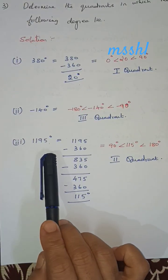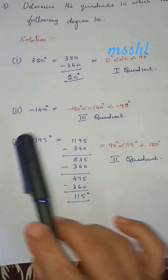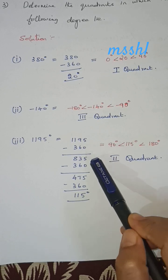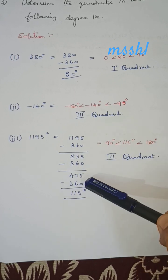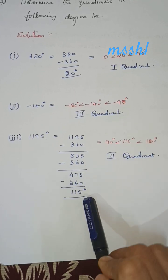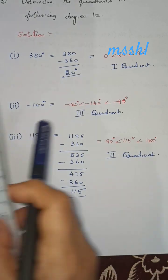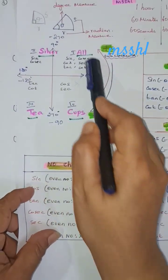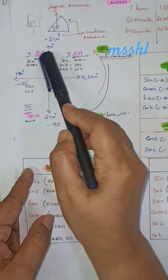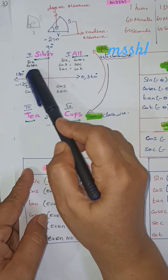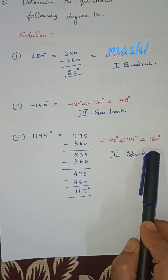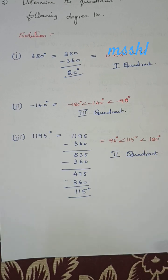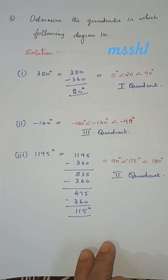The last example is 1195 degrees. Since 361 or more means we subtract 360 repeatedly. Subtracting 360 multiple times from 1195 gives us 115 degrees. 115 lies between 90 and 180, so it is in the second quadrant. Thank you, happy learning.